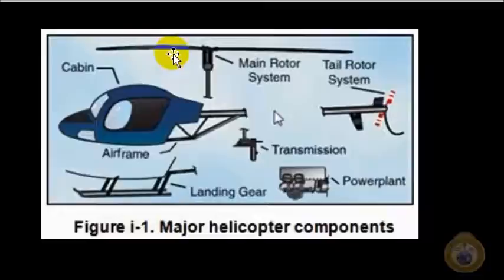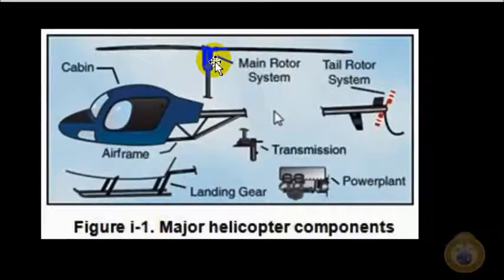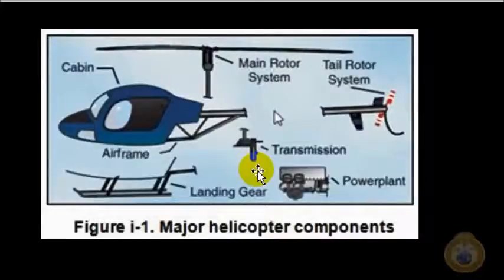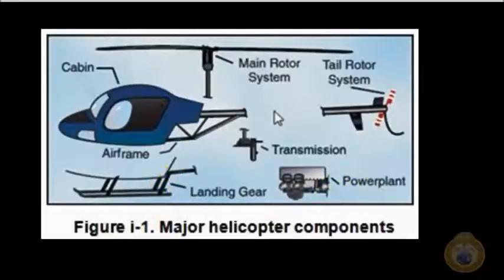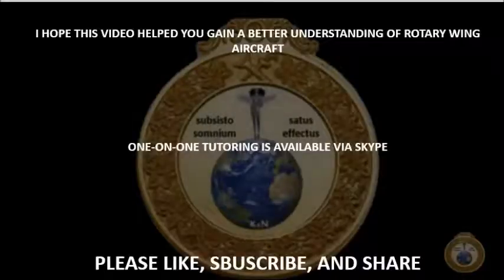So that's basically about it. Just to recap: we talked about the fuselage, which consists of the airframe and cabin housing the cockpit, pilot, co-pilot, passengers, and cargo. We talked about the main rotor systems — for the SIFT, the test will more than likely cover the three main rotor systems: rigid, semi-rigid, and fully articulated. We talked about the tail rotor or anti-torque system that counteracts the torque produced by the main rotor, the transmission gear system, the power plant or engine, and the various types of landing gear. I hope this video helped you gain a better understanding of rotary wing aircraft. Please like, subscribe, and share.